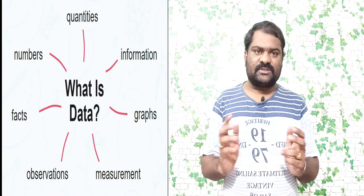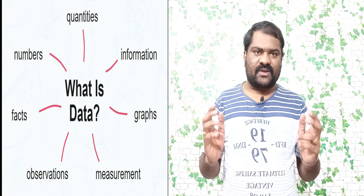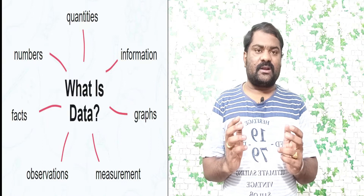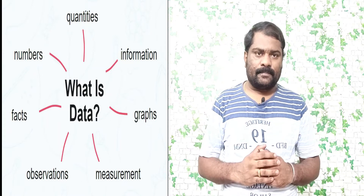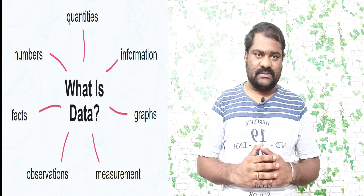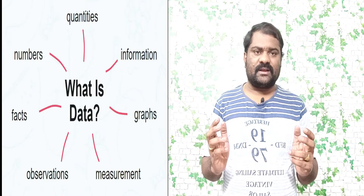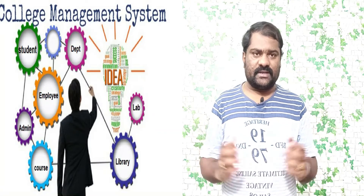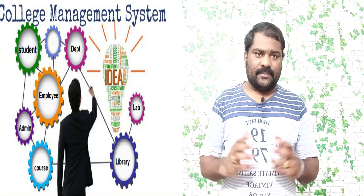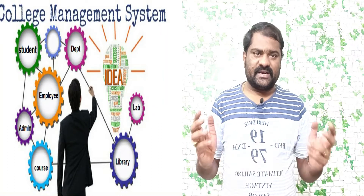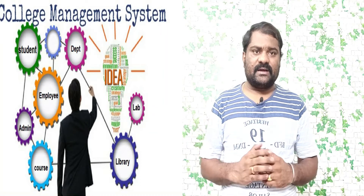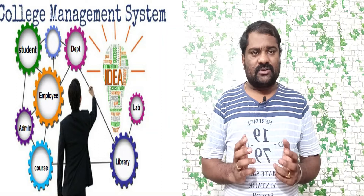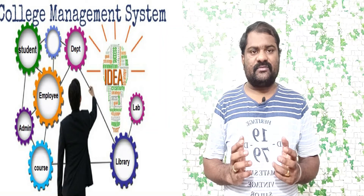First of all, we must know what is data. Data is a collection of raw facts. What is information? The data that belongs to a particular organization is called information. For example, if you take a college — let's assume I am developing an application for a particular college — there is a lot of data: student data, employee data, department data, course data, library data, and some administration-related data. The data belonging to the entire organization is called information. Meaningful data is called information.